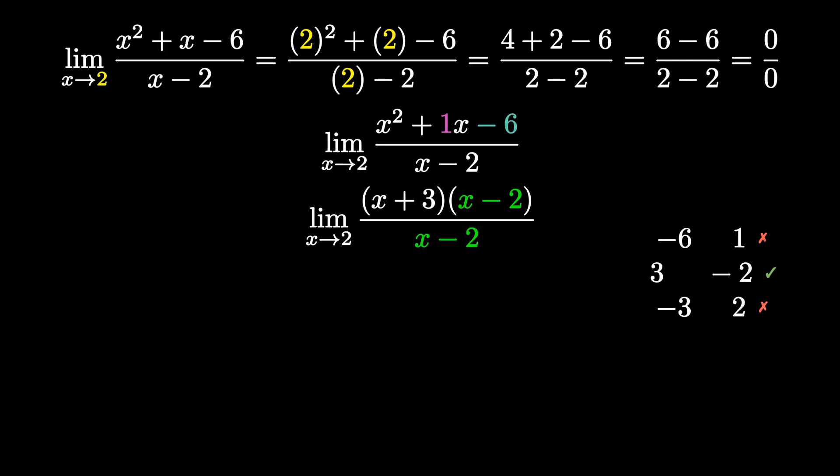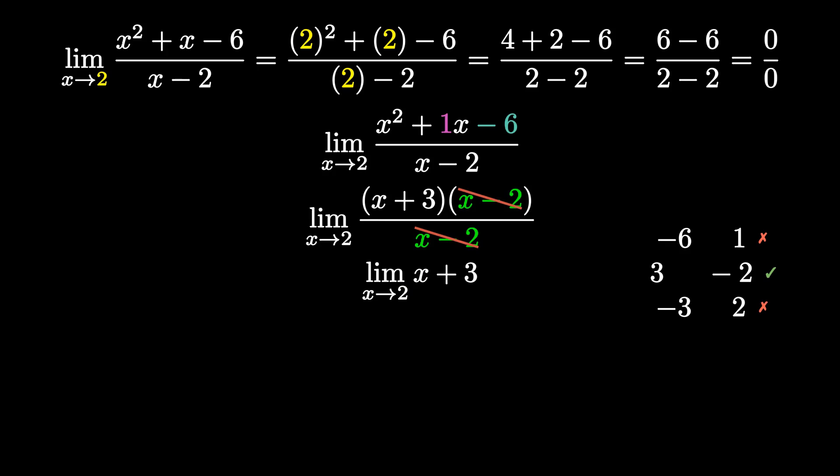Since x minus 2 appears in both the top and bottom, this indicates a hole, which means we can cancel them out. Canceling x minus 2 simplifies our expression to just x plus 3. The goal with indeterminate limits is to cancel something out, and once you do, you can re-evaluate.